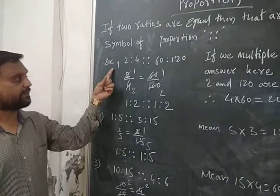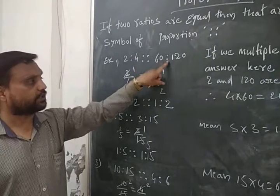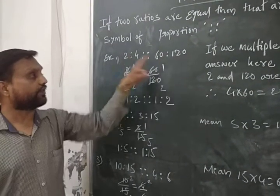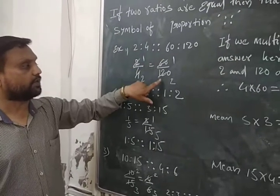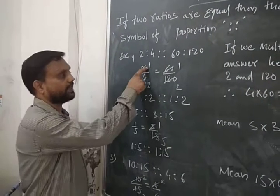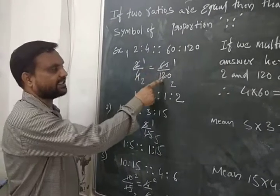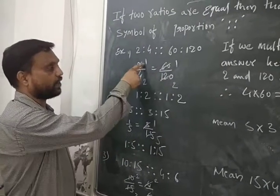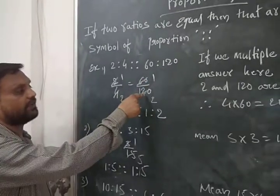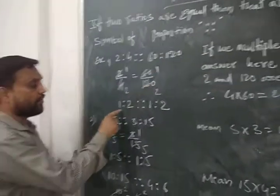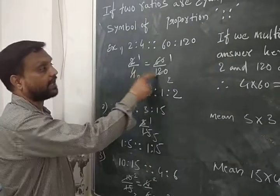Here the first example: two is to four, proportion to sixty is to one twenty. Now we have to find the ratio of both. Two upon four equals sixty upon one twenty. Two ones are two, two twos are four, sixty ones are sixty, sixty twos are one twenty. The ratio of two upon four is one is to two, and the ratio of sixty upon one twenty is also one is to two. One is to two proportion to one is to two — it means these both are in proportion.